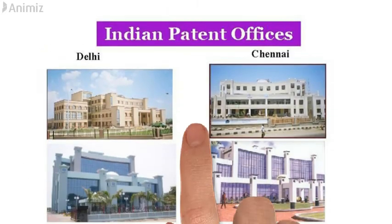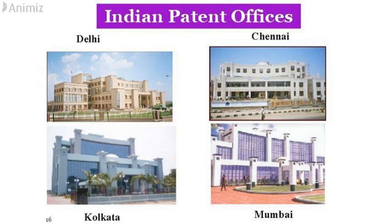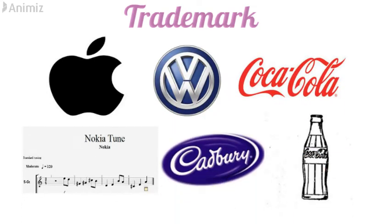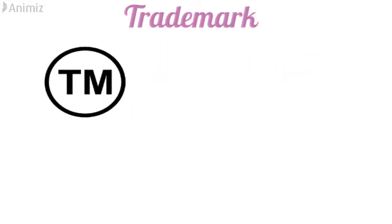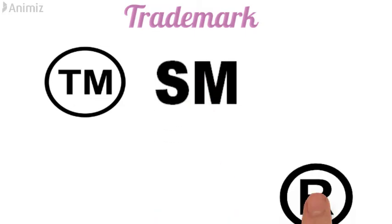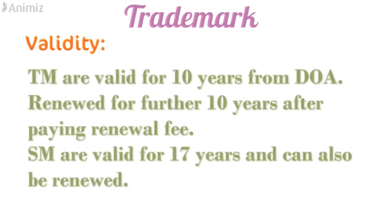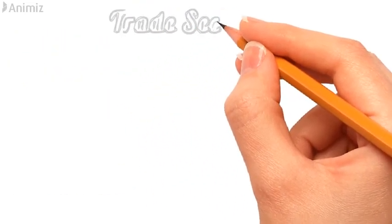There are four patent offices in India — one each at Delhi, Chennai, Kolkata, and Mumbai — where you file the application for a patent. If you fit all the criteria, they will grant you a patent. Next is a trademark. A trademark is a symbol, a logo, a word, a sound, a color, or a design that is used to identify a business or a product in commerce. TM is for unregistered trademarks and is used for products; SM is for unregistered service marks and is used for services; and R is for registered trademarks. Examples of TM and SM are BMW and Urban Clap respectively. The validity of a trademark is 10 years from the date of application and can be renewed for a further 10 years after paying the renewal fees. Similarly, service marks are valid for 17 years and can also be renewed after paying the renewal fees.